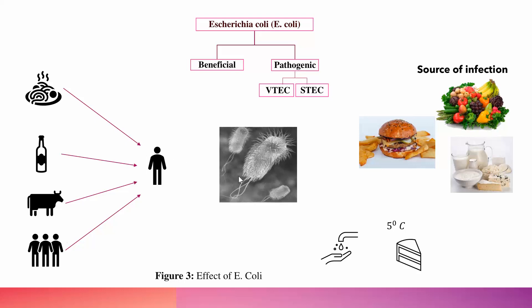Infection in humans with VTEC leads to mild to bloody diarrhea; however, more severe complications can occur which may potentially even lead to kidney failure. Contaminated food or water, contact with infected animals, and close interaction with infected humans are all transmission routes. VTEC is also found in vegetables, fruits, food, and dairy products made from raw milk.